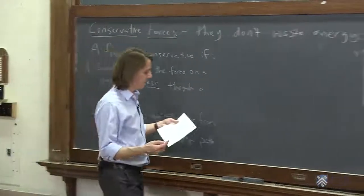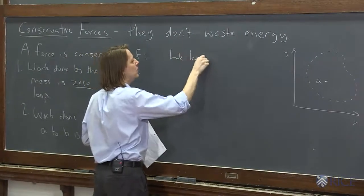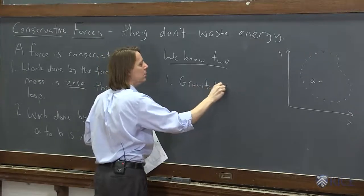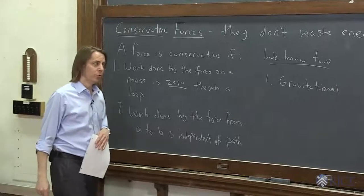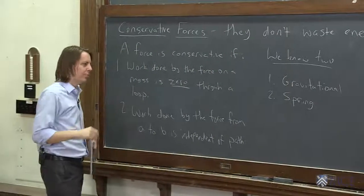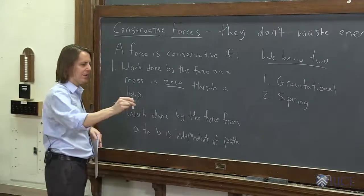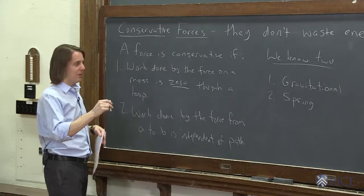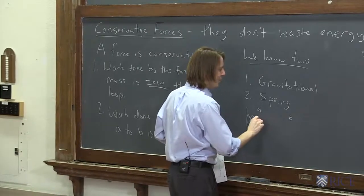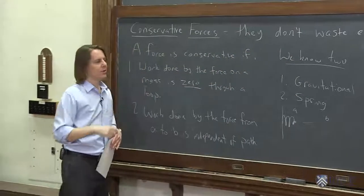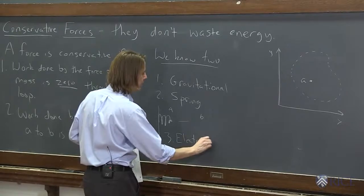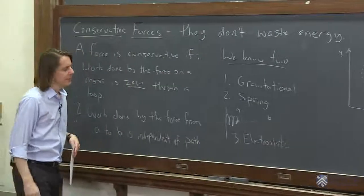We know two conservative forces so far in this class. One is the gravitational force — it follows these rules. The second is the spring force. If you went through and did all the math in one dimension for a spring, you'd find both definitions are true. A loop would be going from one place back and forth — it would be the same. Going from A to B, or going A out to C and back to B — however you deal with a spring, it will always be conservative. A third one you may have heard of from other courses is the electrostatic force. If you take Physics 102X, we'll talk about that force quite a bit, and it is conservative.